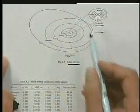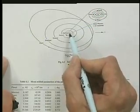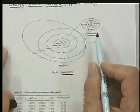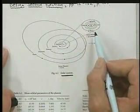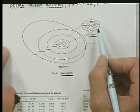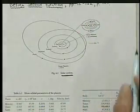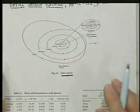Now, if you zero in inside the orbit of Jupiter, we see the little terrestrial planets: Mercury, Venus, Earth, and Mars — also called the interplanets.